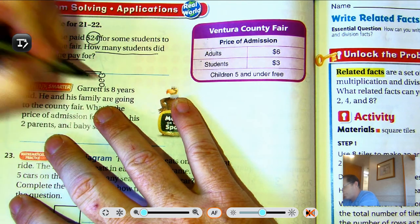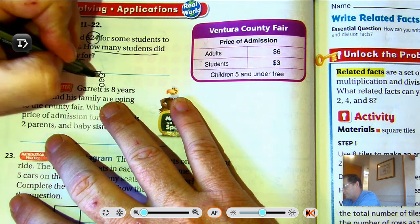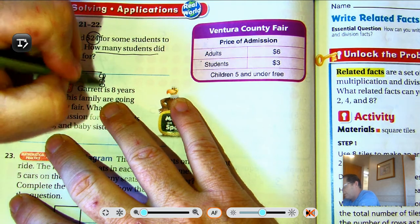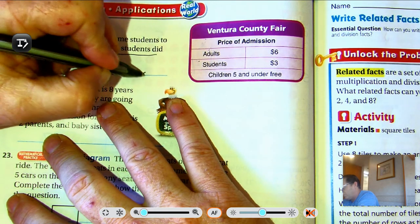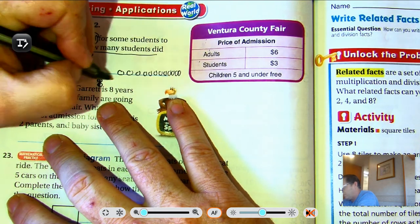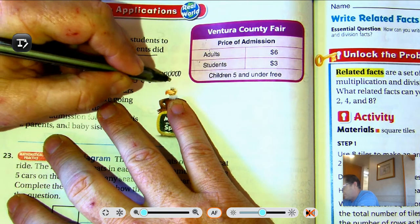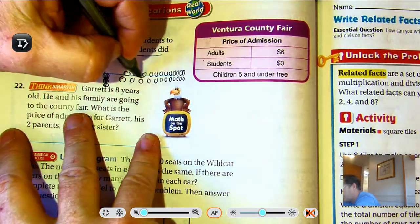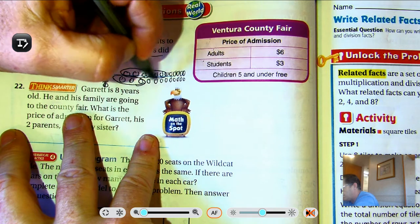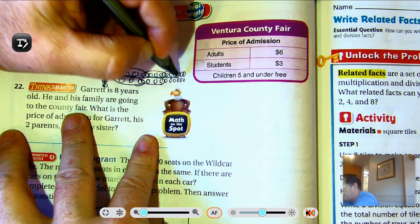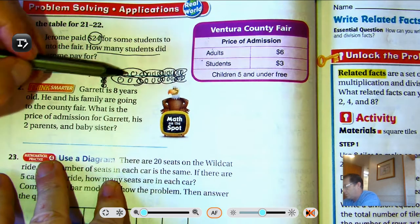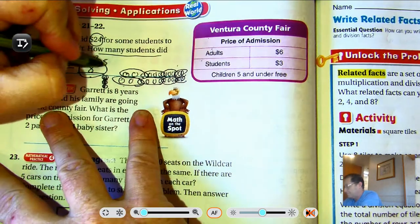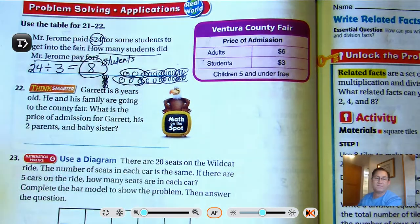We can list 24. So we have $24. Now we're going to circle groups of 3 because that's how much it costs to get in for 1 student. Circling groups of three: 1, 2, 3, 4, 5, 6, 7, 8. 8 students were paid for by Mr. Jerome.